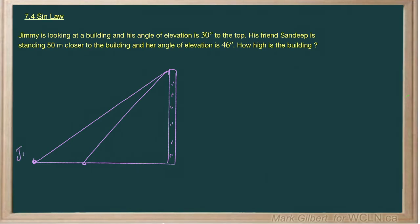How high is the building? So I have a diagram here and this right here would be Jimmy and the angle of elevation, if your eye is like this, your angle of elevation is looking up like that. So here's his angle of elevation and it's 30 degrees. Now Sandeep is standing 50 meters closer, so this distance here is 50 meters to Sandeep, and her angle of elevation is 46 degrees. We need to find the height of the building.